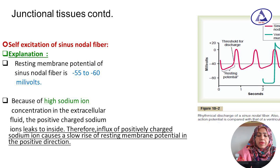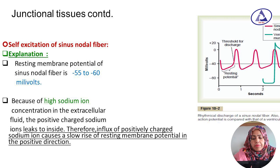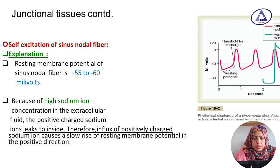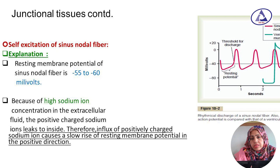The resting membrane potential of the SA node is minus 55 to minus 60 millivolts. We know the resting membrane potential of the large nerve fiber is minus 90 millivolts, but the SA node is minus 55 to minus 60 millivolts. This is because of the high sodium ion concentration in the extracellular fluid, so positive charge of sodium ions leak to the inside.